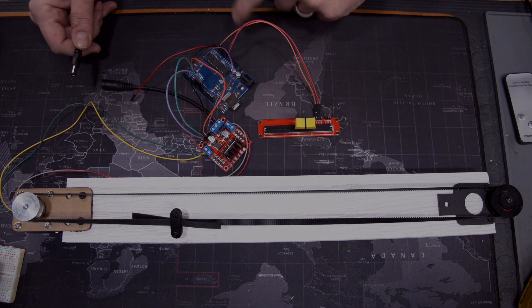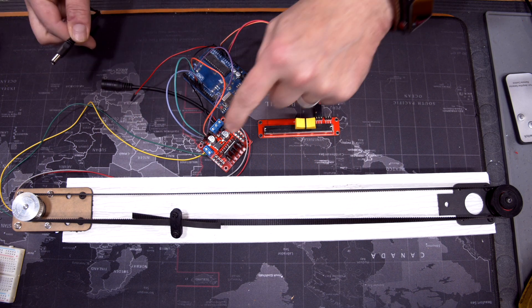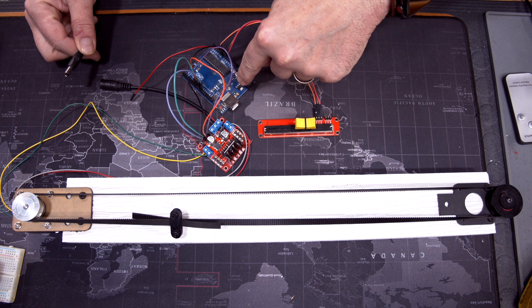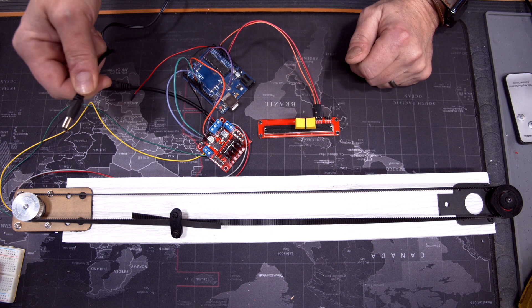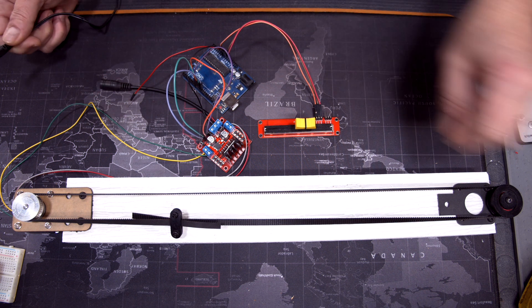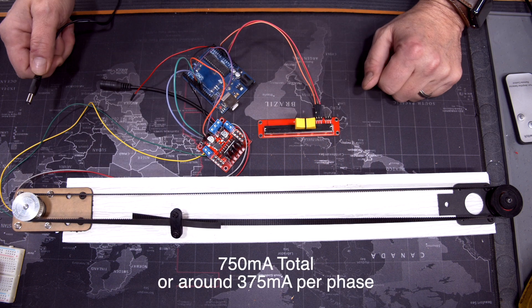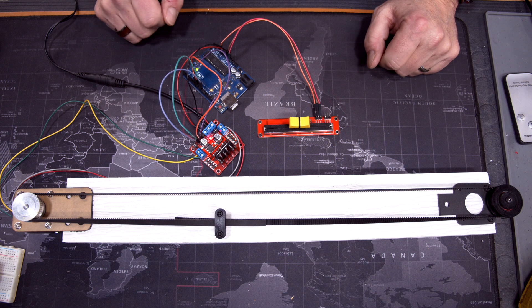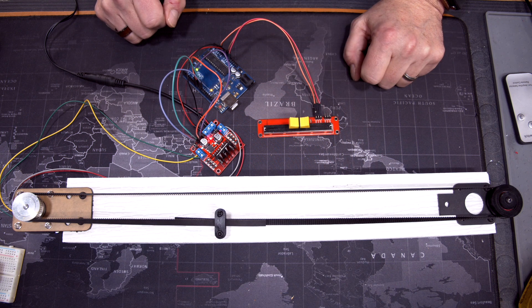All right. So I uploaded the code to the UNO right here. I'm going to give power to the 298 right there. And this one will power the Arduino at the same time. I'm using a 12 volt 1.5 amp power supply because my motor here is only a 750 milliamp motor. So there we go. I'm powered. The L298 is lit. The UNO is getting power. My little slider is in the middle.